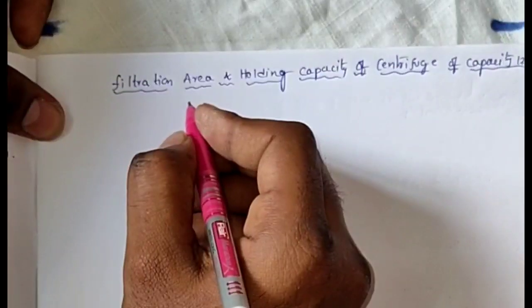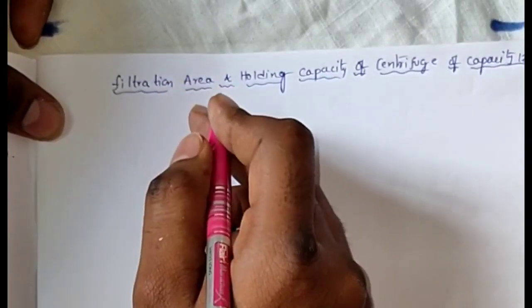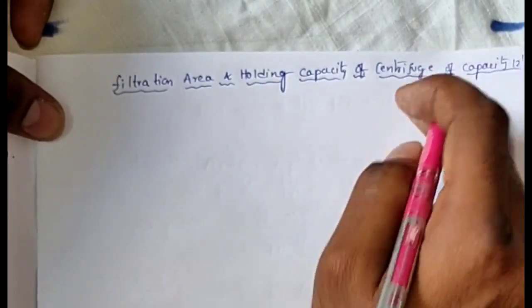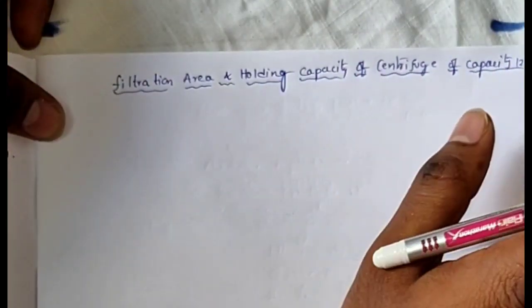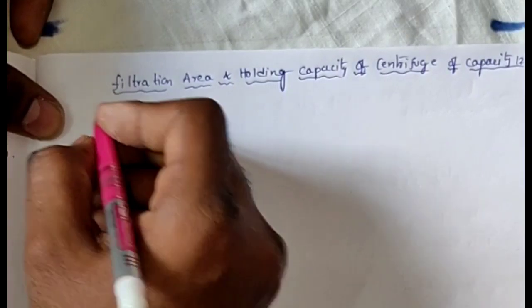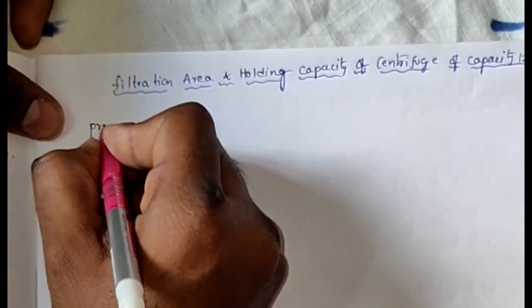Today we are going to find out the filtration area as well as the holding capacity of a centrifuge of capacity 12 inch. First and foremost, we will go into the principle of centrifuge.